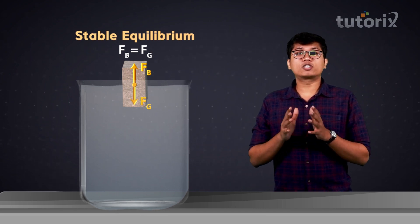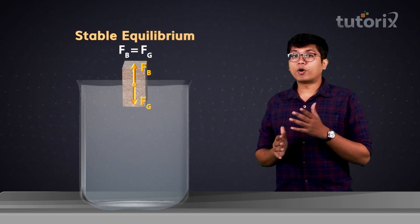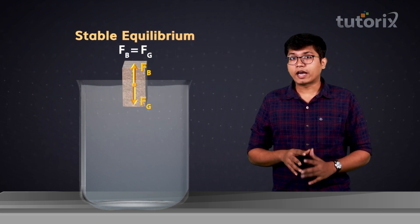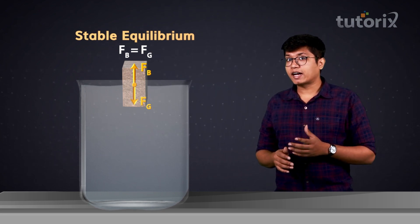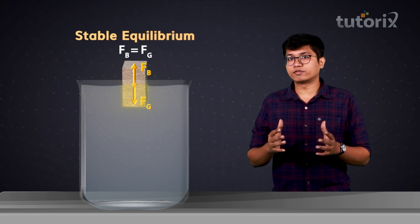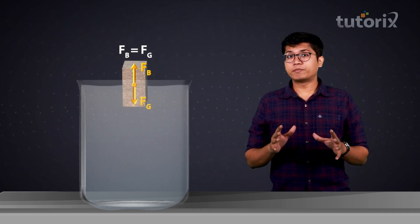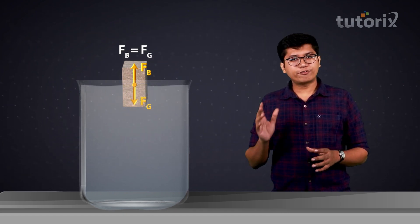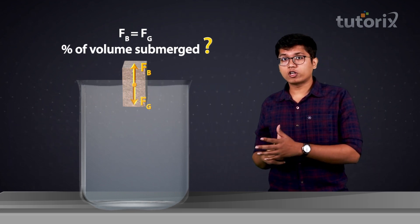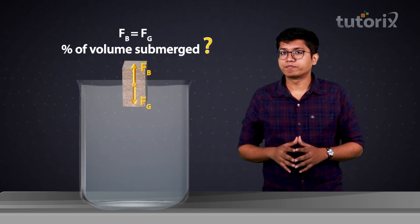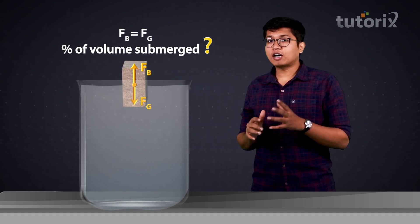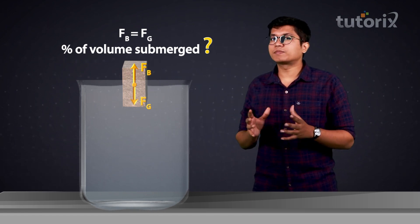At stable equilibrium, when the two forces are equal, the body would neither rise nor would it sink. It would just stay suspended, with part of its volume under the surface of the fluid. At the equilibrium, different objects may have different percentages of their volume inside the fluid, and we need to find a relation that allows us to find this percentage.